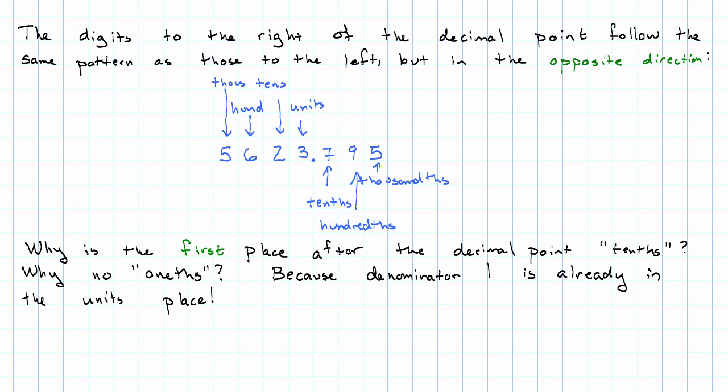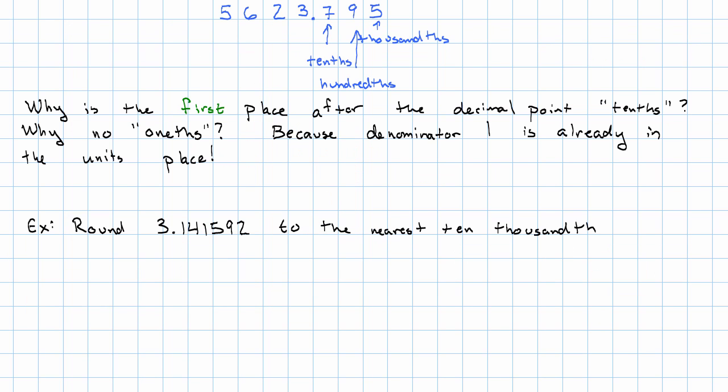So how do we use this? Well, one of the big places we need to be aware of decimal place value is when we're talking about where we're going to round. Say we want to round 3.141592 to the nearest ten thousandths. In order to do that, we need to locate the ten thousandths place.